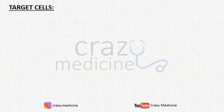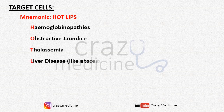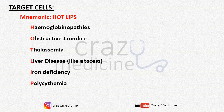Next is target cells — the conditions in which they are seen — and the mnemonic is HOT LIPS. H stands for hemoglobinopathies, O stands for obstructive jaundice, T stands for thalassemia, L stands for liver disease like liver abscess, I stands for iron deficiency, P stands for polycythemia, and S stands for sideroblastic anemia.